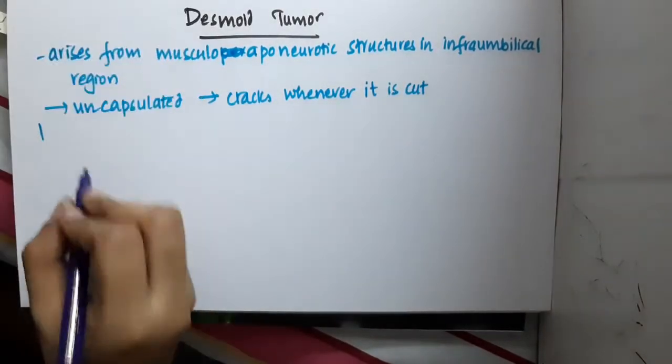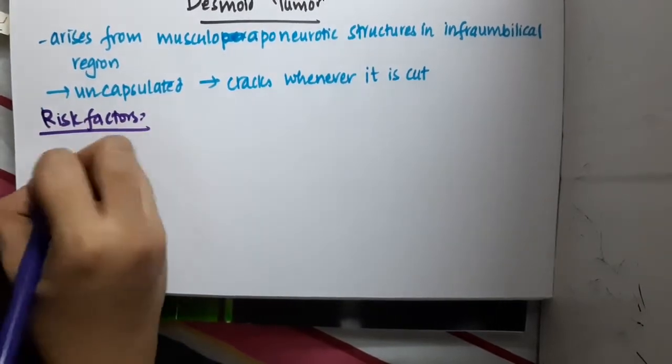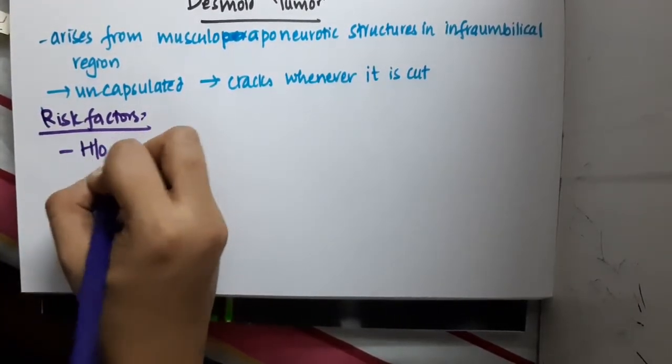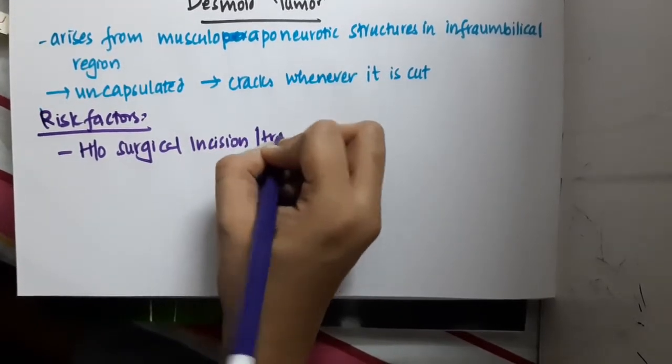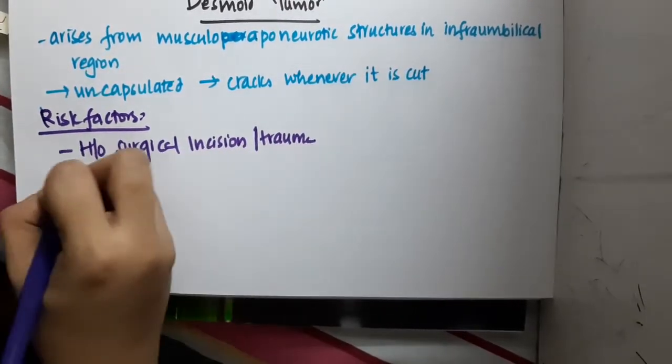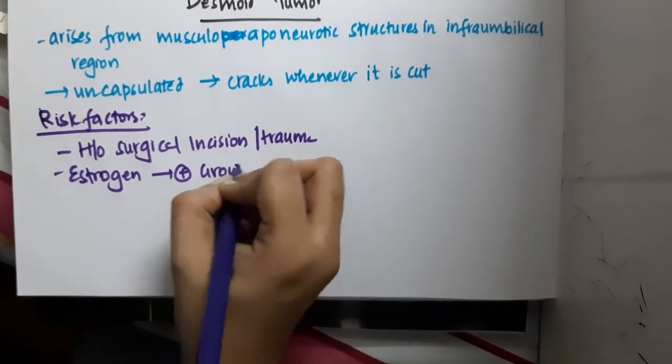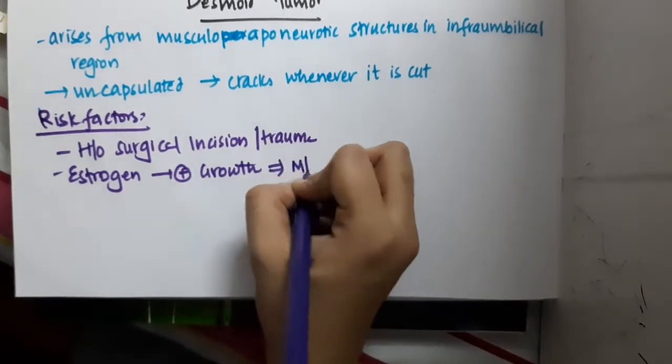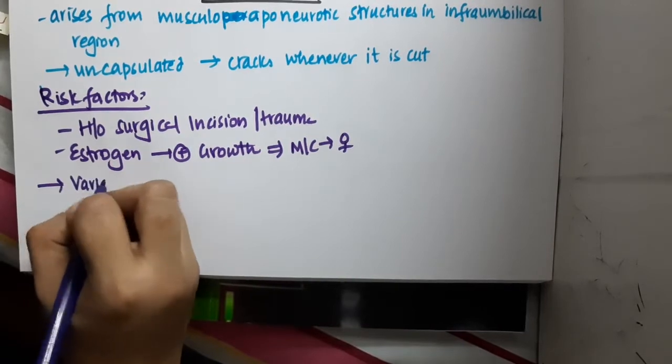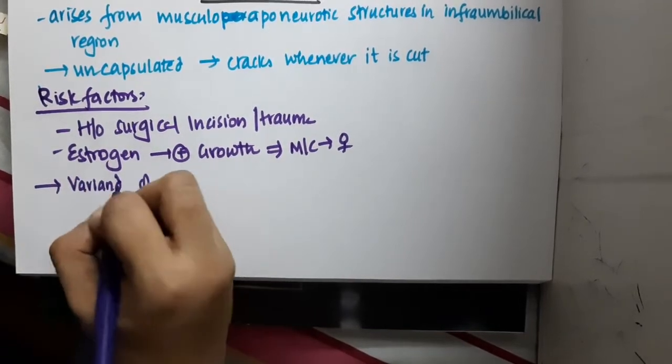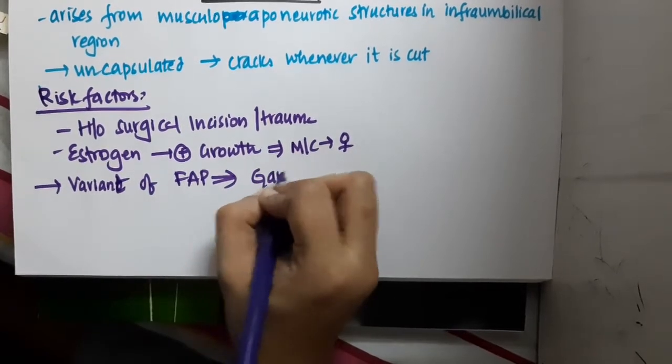Now what are the risk factors? Risk factors of Desmoid tumor include history of surgical incision or trauma. Then estrogen stimulates the growth, so it is most common in females. There is also a variant of familial adenomatous polyposis called Gardner syndrome.